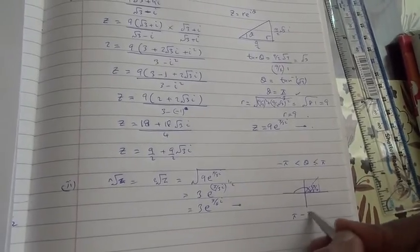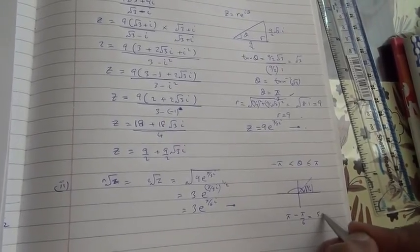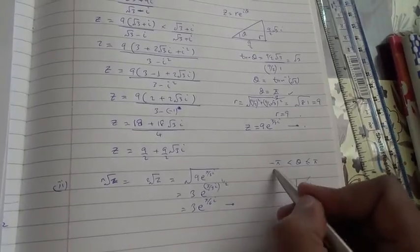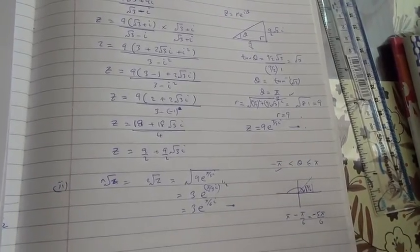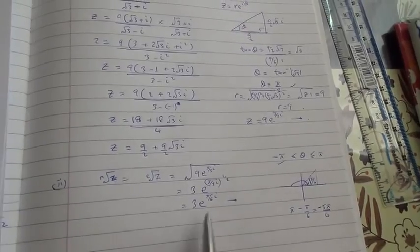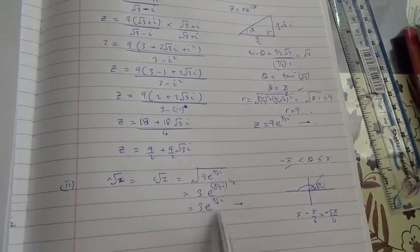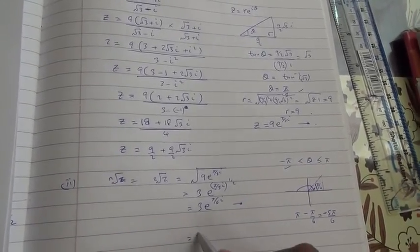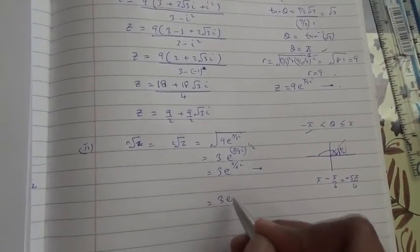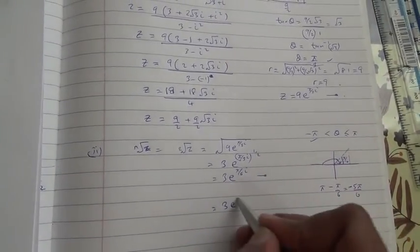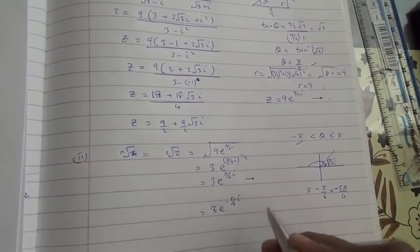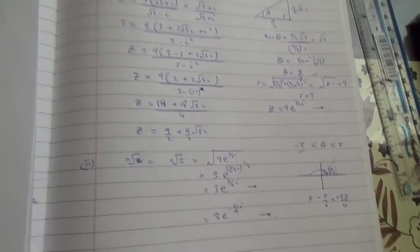So π minus π upon 6 is going to give us 5π upon 6. But because we are moving from negative, it can be plus or minus. We are taking the minus anyway, because we have got the plus for the first one. And now for the second square root, here it is going to be 3e to the power of minus 5π upon 6i. And here we are for this question.